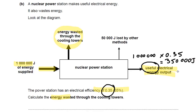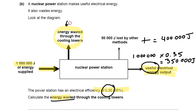Now that's not our answer — we're asked for the energy wasted through the cooling towers. So far we've got 1 million being transferred to 350,000 and 50,000. These two together are 400,000 joules. So what's left over to be wasted is 600,000 joules. And that's your answer. You get one mark for calculating that correct part and one mark for working out that part.